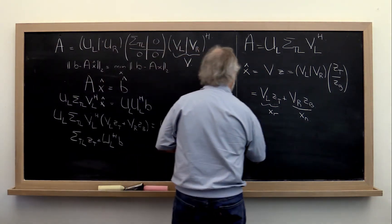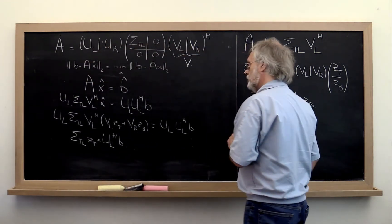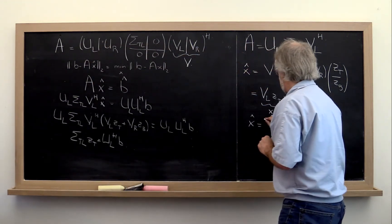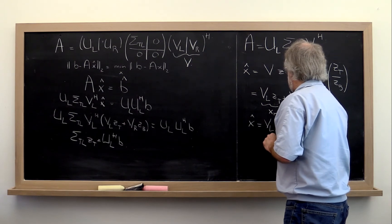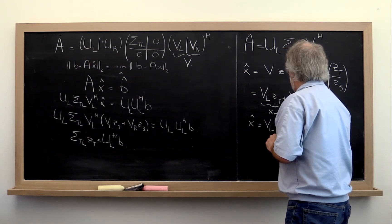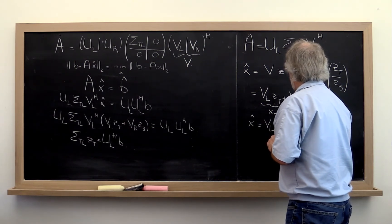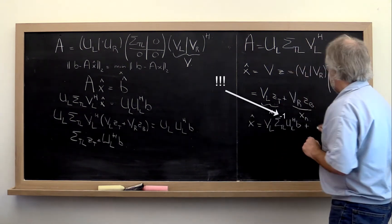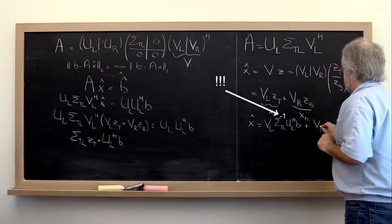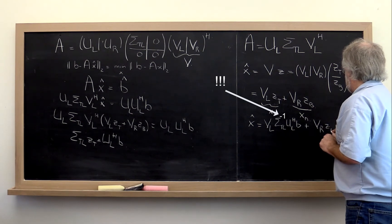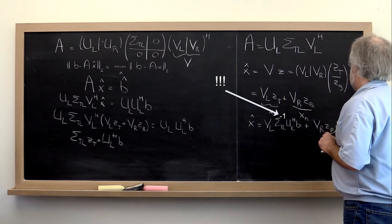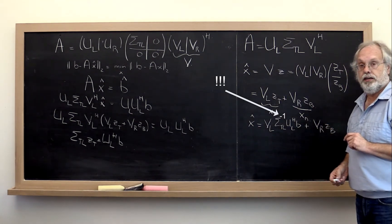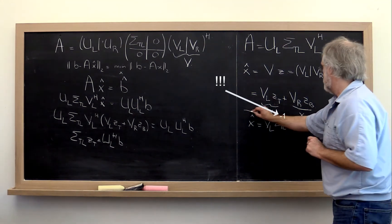That means x-hat equals VL times sigma top-left inverse times UL Hermitian transpose times B, plus any vector in the null space of A. That's the solution.